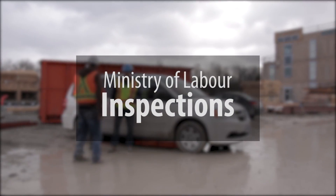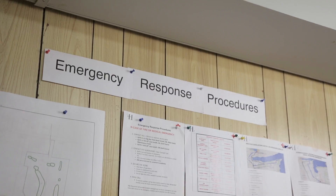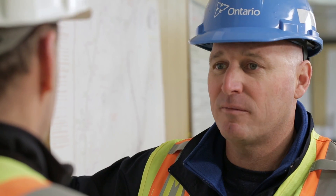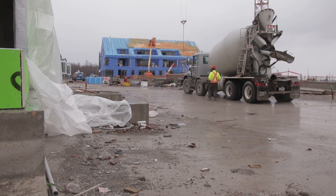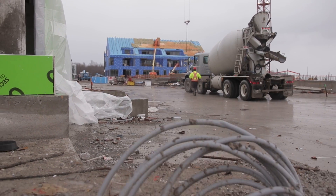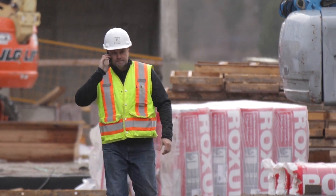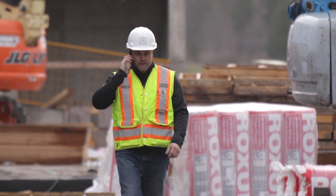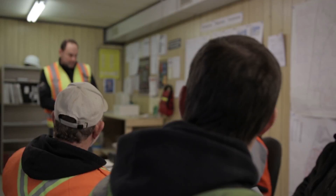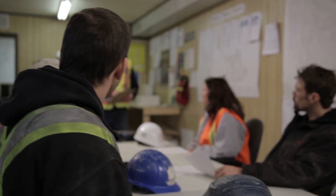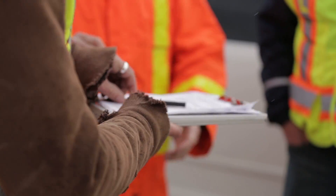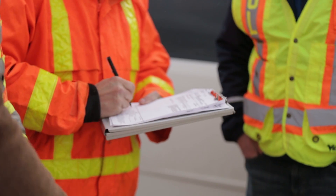Ministry of Labour inspectors do not approve emergency response or rescue procedures. Inspectors check for adequate emergency planning for the project, conspicuously posted emergency procedures, access to a system of two-way communication in the event of an emergency, and worker knowledge and understanding of the procedures. Orders can be written if inspectors see contraventions.